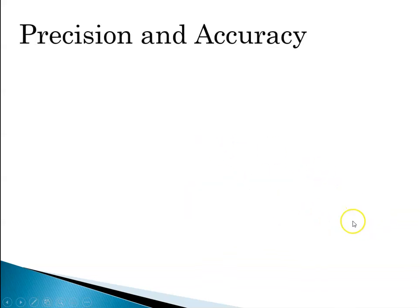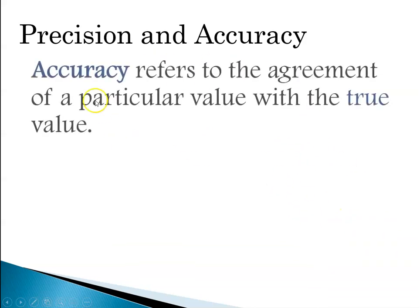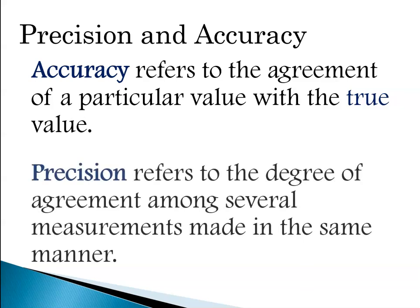That leads us to precision and accuracy. Accuracy refers to the agreement of a particular value or measurement to a true value. Precision refers to the degree of agreement among several measurements made in the same way. For instance, if I measure the width of a desk five times using the same yardstick, my precision will be how close together that group of measurements is — you can think of precision as a measure of reproducibility.